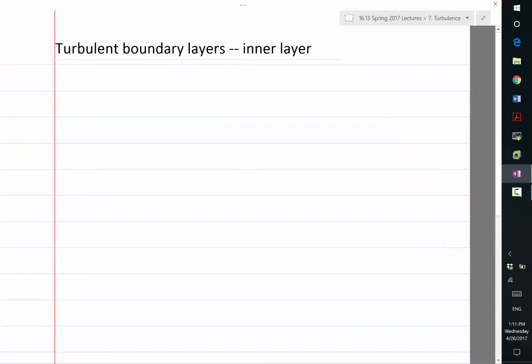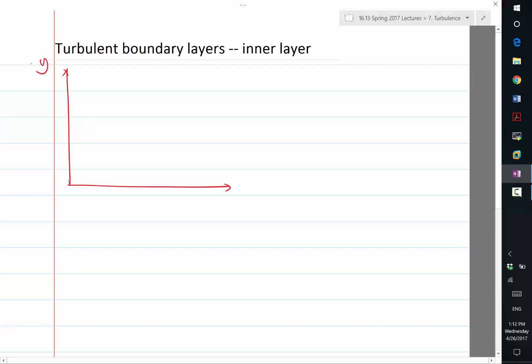Last time we talked about the inner layer of turbulent boundary layer. Just to refresh, the turbulent boundary layer, if you look at a plot of y (the distance to the wall) and the velocity, it can be split into an inner layer and an outer layer.